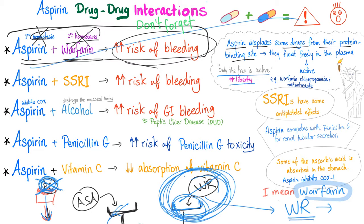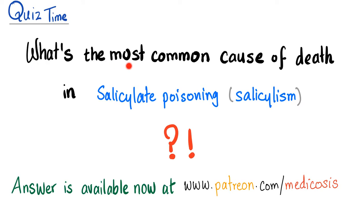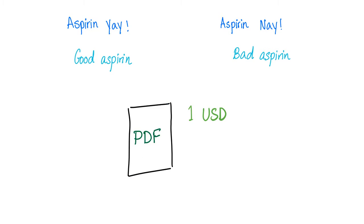Aspirin plus vitamin C decreases the absorption of vitamin C, because part of vitamin C absorption occurs in the stomach, and aspirin damages the stomach lining. Quiz time: what is the most common cause of death in salicylate poisoning or salicylism — for example, when a child swallows many aspirin tablets? Let me know in the comments.